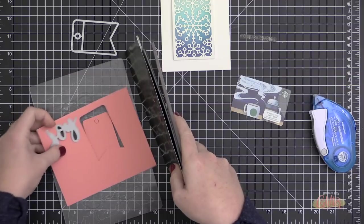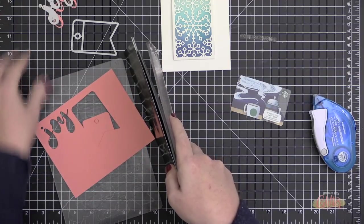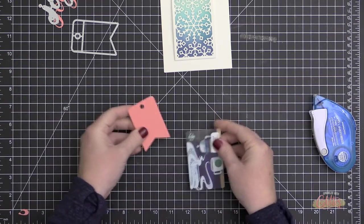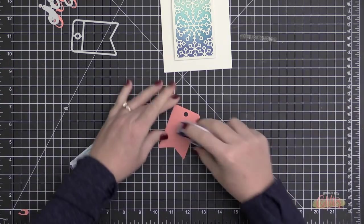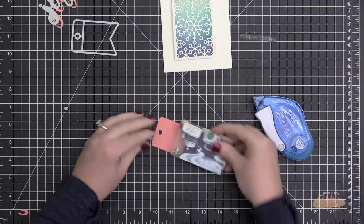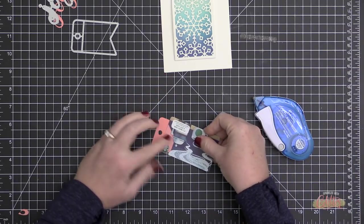Now that I have my pocket created, I'm going to die cut some coral cardstock. I'm using a scripty Joy die from My Favorite Things and these new Fold Up Tags. I'm not going to actually use it as a tag but actually a topper for this gift card.